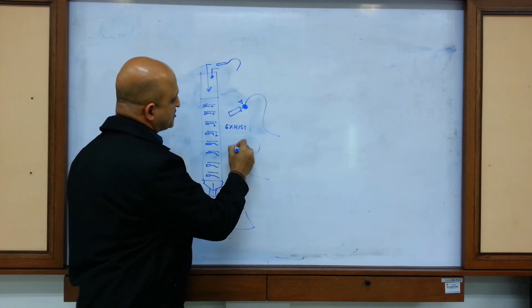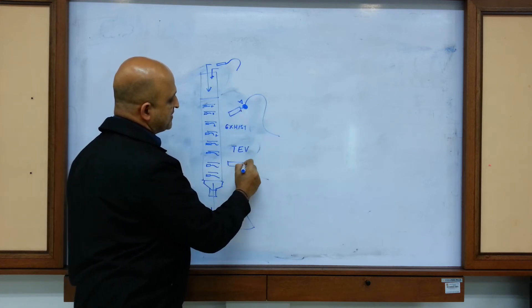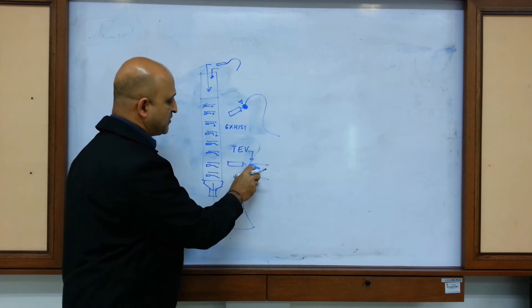Alternatively, enzymes such as tobacco etch virus or TEV protease can be applied in conjunction with a tag. This TEV protease will specifically cleave this site, and you will end up with your purified protein.